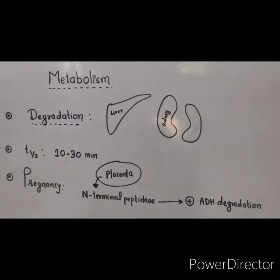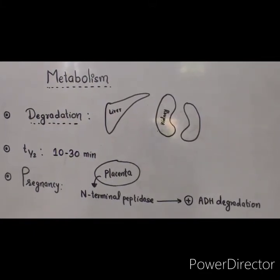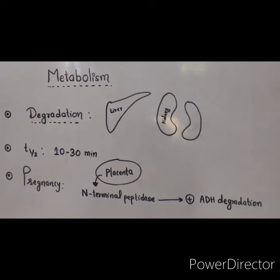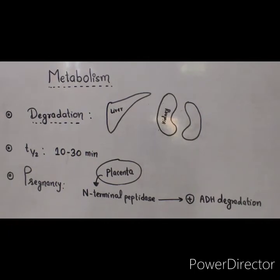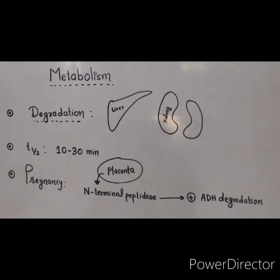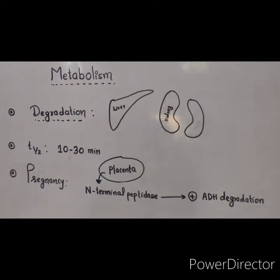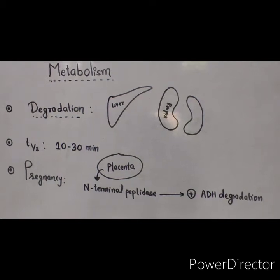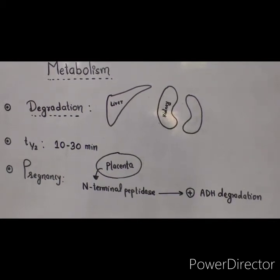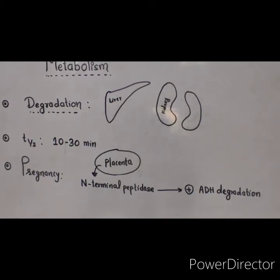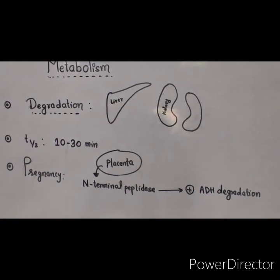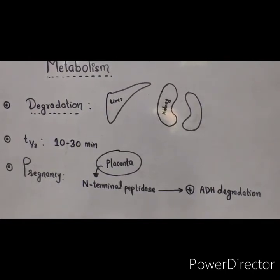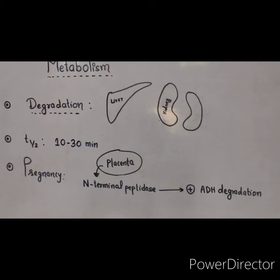Regarding metabolism of antidiuretic hormone, it is degraded irreversibly in the liver and kidneys with a half-life of 10 to 30 minutes. A special point: in pregnancy, the placenta secretes an enzyme called aminopeptidase. This enzyme increases the degradation of antidiuretic hormone three to four-fold, causing ADH to decrease and resulting in a disease called gestational diabetes insipidus. After delivery, this is treated automatically.